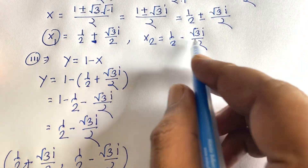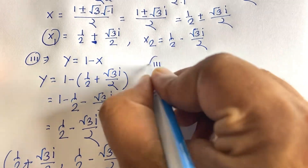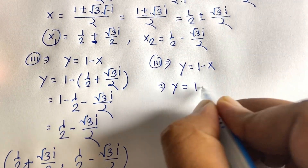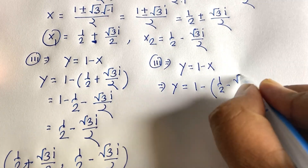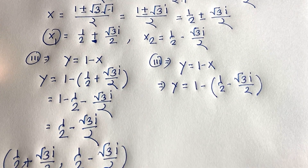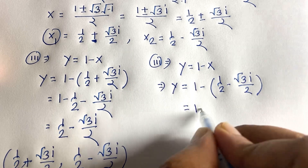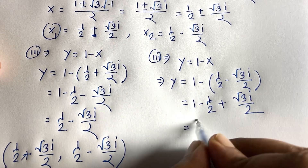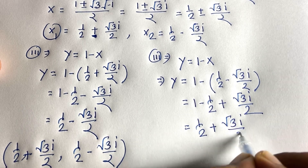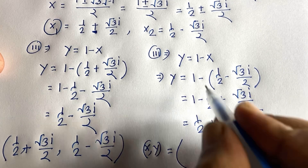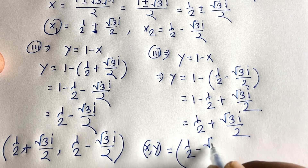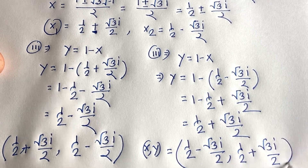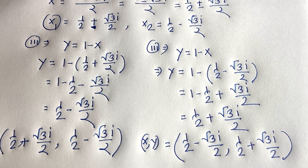For x₂ equals 1/2 minus (√3/2)·i, we again use y equals 1 minus x. So y equals 1 minus (1/2 minus (√3/2)·i), which gives y equals 1/2 plus (√3/2)·i. So when x₂ equals 1/2 minus (√3/2)·i, y equals 1/2 plus (√3/2)·i. These are the values of x and y.